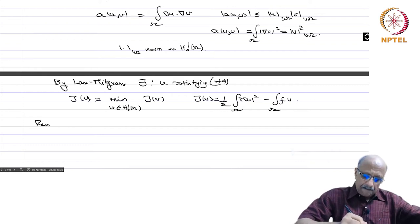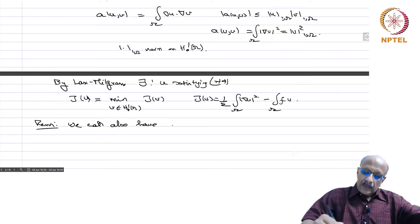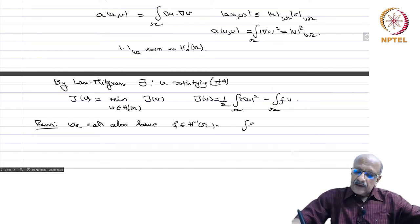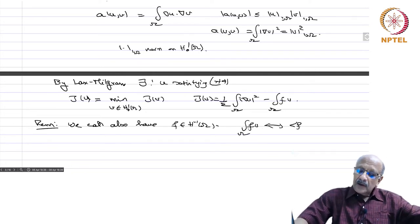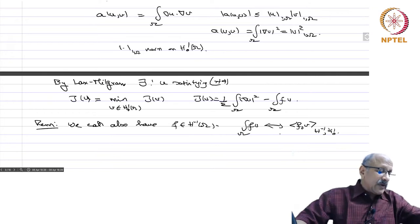Remark: we can also allow f in H^{-1}(omega), and then instead of the integral f v dx, this will be replaced by the duality bracket between H^{-1} and H^1_0. That is the only change; otherwise the problem will still have a solution.